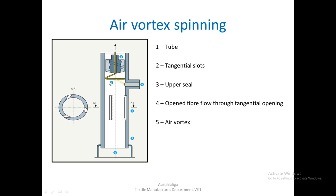Five is the air vortex shown here — the air is flowing in a rotational manner. This happens because of vacuum source six. Because of this vacuum, air is sucked into the tube through the tangential slots. The air tries to move upward towards the seal, but since there is an airtight seal, it cannot escape and instead flows in a rotational manner — like a vortex — moving downward towards the vacuum source. This keeps happening continuously, forming a continuous air vortex moving from the bottom to the top and back.